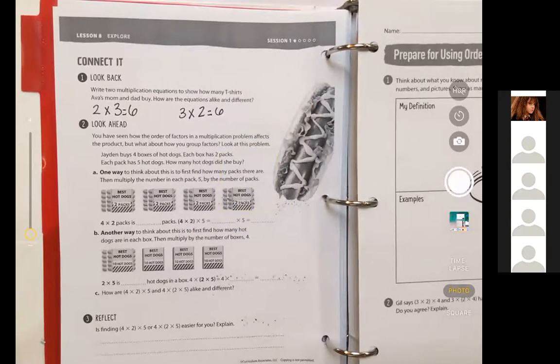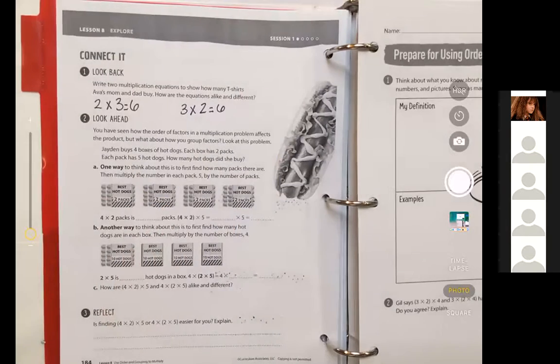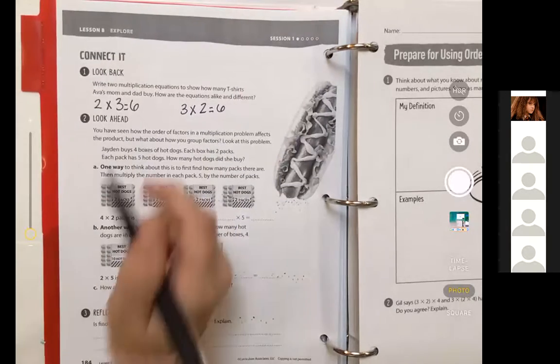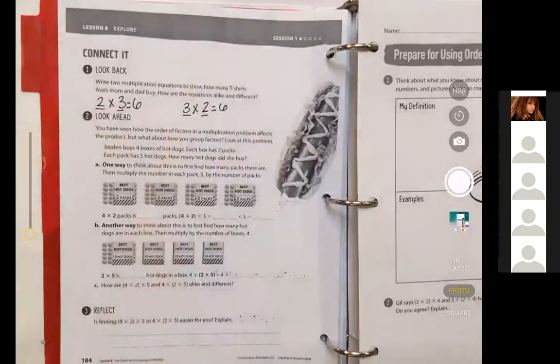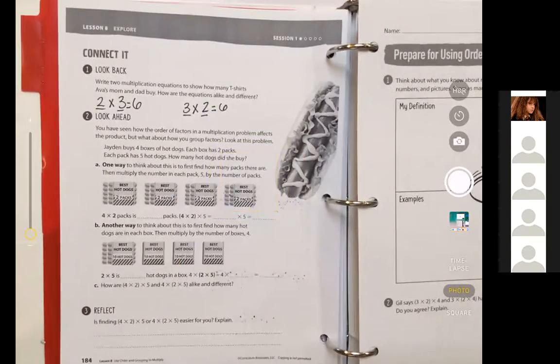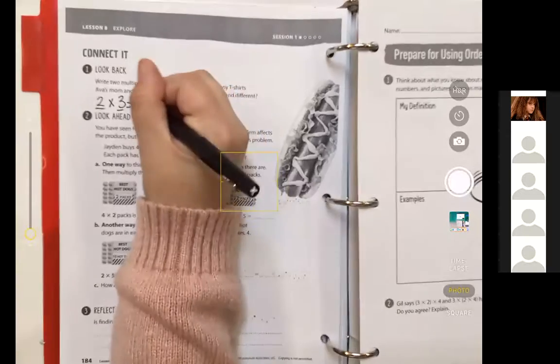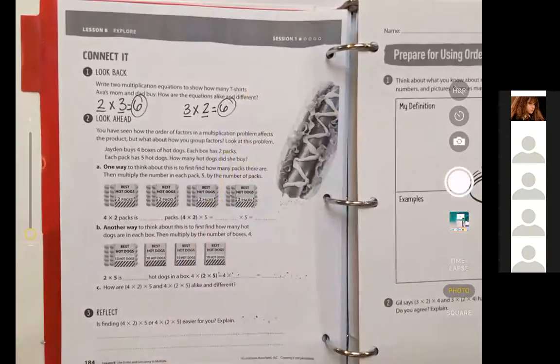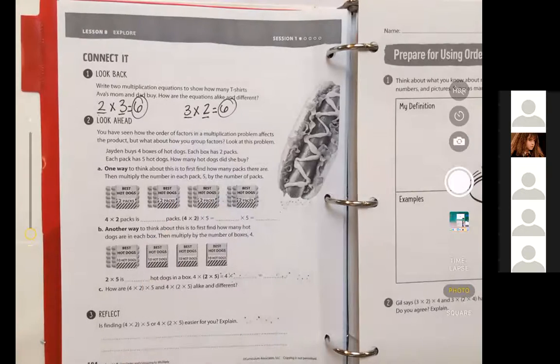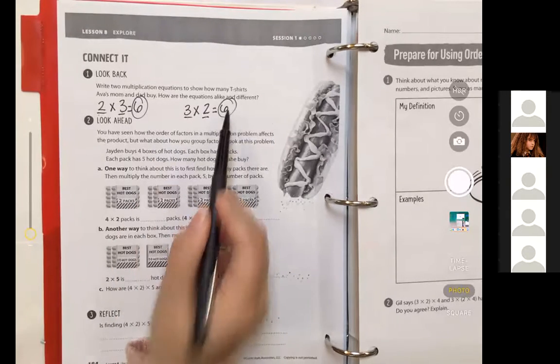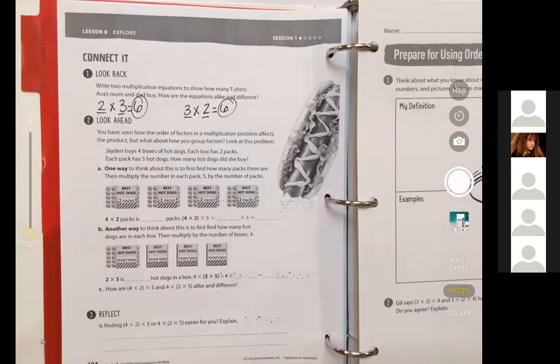And I just had somebody tell me in the chat that they just switched the numbers. So they use the same factors. They use two and three. And when you use the same factors and multiply them together, you get the same product. So because they're the same factors or numbers, you get the same product.